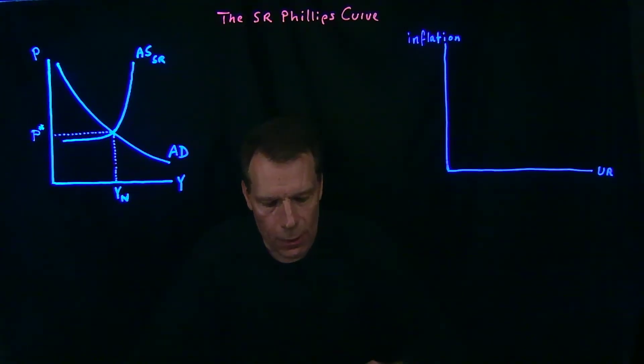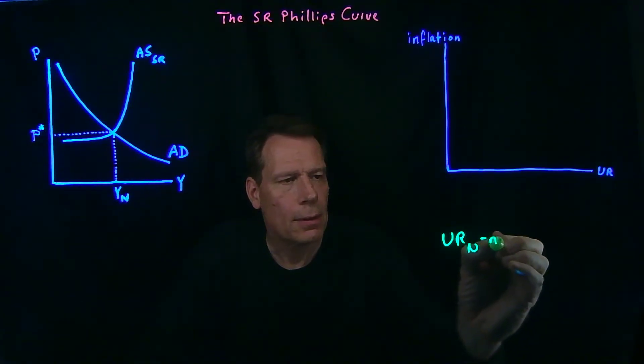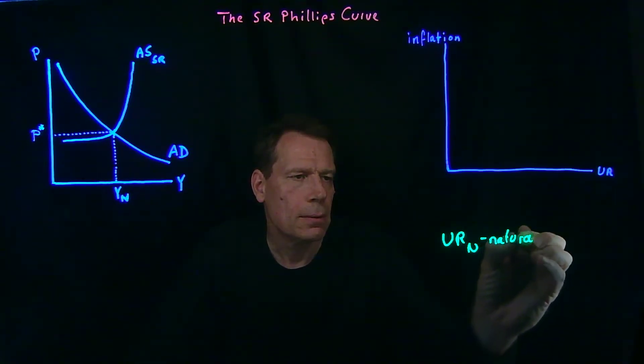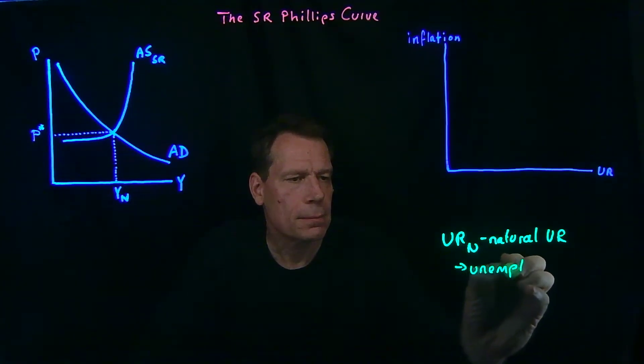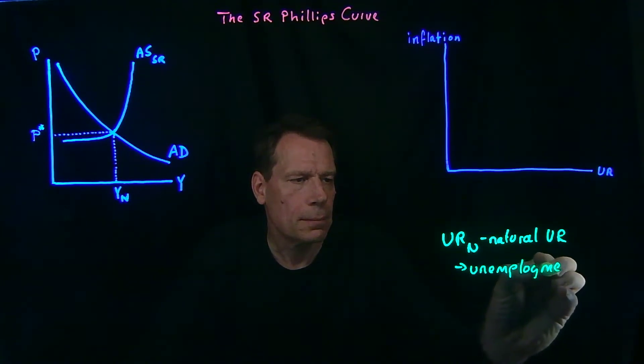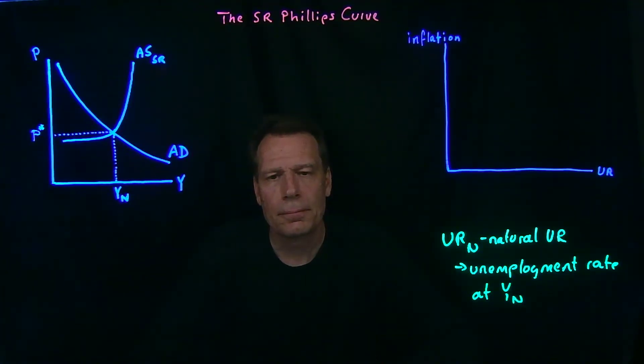And that level of unemployment is called the natural level of unemployment. And it's associated with the natural unemployment rate. So the natural unemployment rate is simply the unemployment rate at the natural level of GDP. And it emerges because it takes time to find new work if you lost your job.